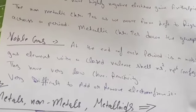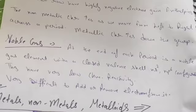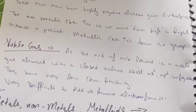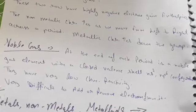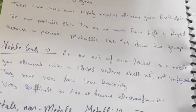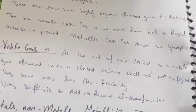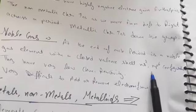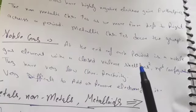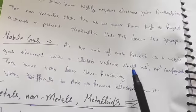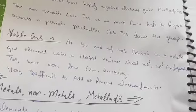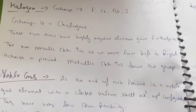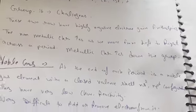We call them noble gas because they have very low chemical reactivity. As the name suggests, noble means inert, so they show low reactivity. It's very difficult to add or remove electrons from them because their configuration is already fulfilled. That's why this is a very difficult task for us.